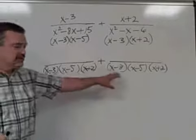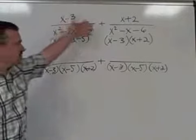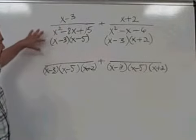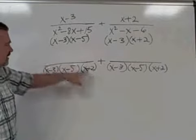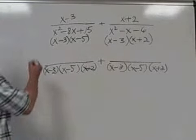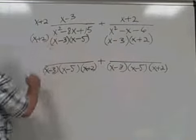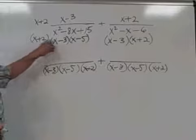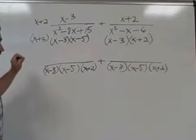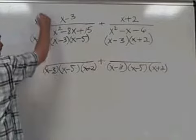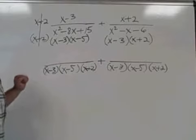We've now constructed our common denominator. Now we have to build these fractions up. This fraction is missing the factor of x plus 2 when I compare the denominator to the common denominator. So I must include x plus 2 as a factor here, and I have to multiply the numerator and denominator by that quantity so that I'm actually multiplying just by 1.